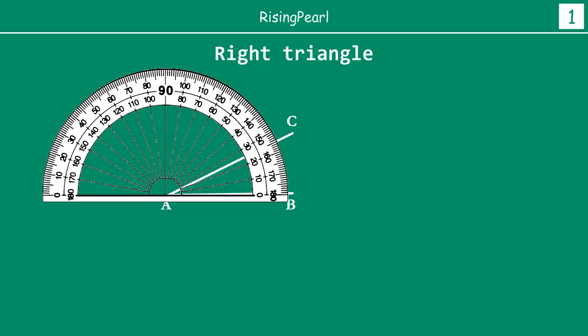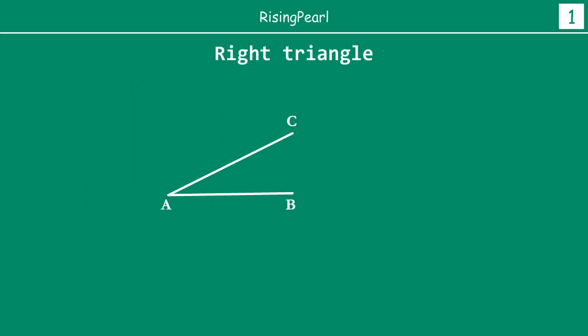You could have picked any angle — 10 degrees, 30 degrees, 80 degrees — it doesn't really matter what it is. Now let's get the protractor out. So this angle, in our example, is 25 degrees.